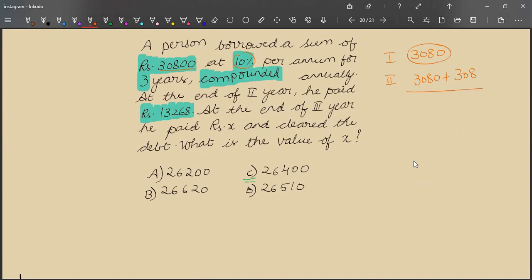So total interest is 6,160 plus 308, which is 6,468. So this is the extra amount that we need to pay along with 30,800 at the end of second year.